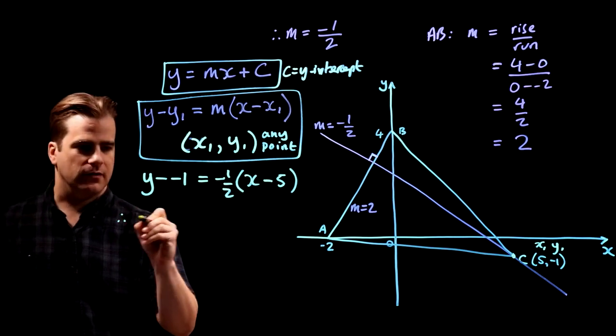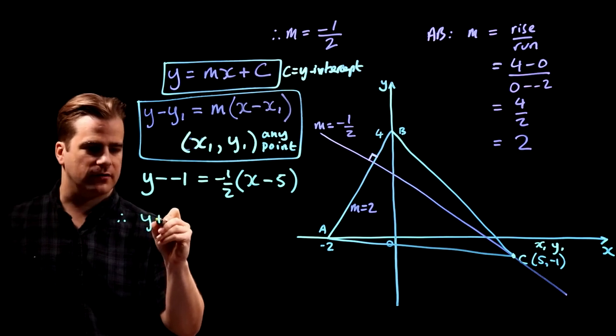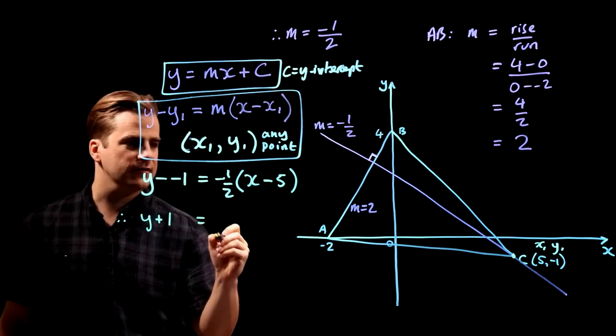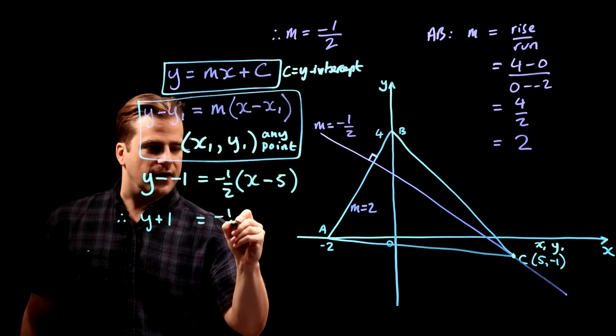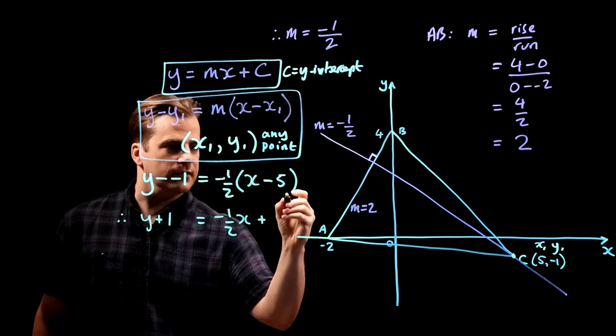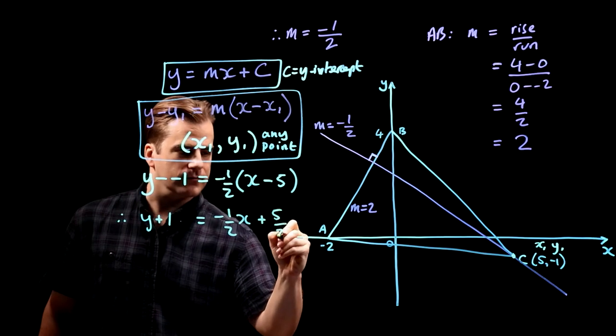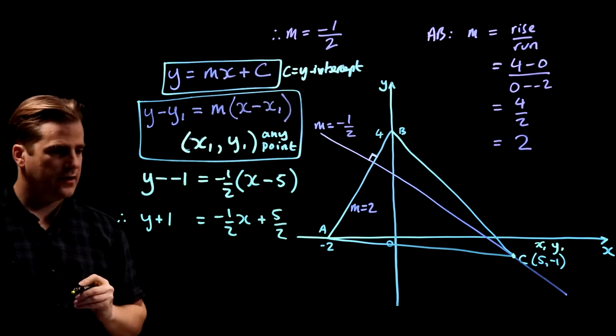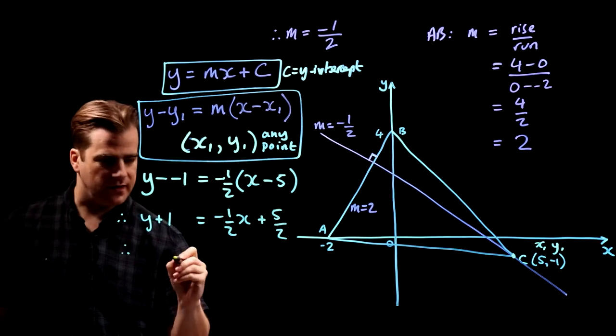So therefore, y minus minus 1 is y plus 1 equals minus a half x minus times minus is a plus 5 over 2. Take one over there, subtract one from both sides.